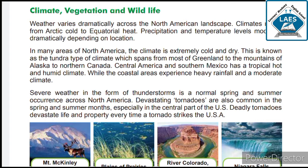This is known as the tundra type of climate, which expands from most of Greenland to the mountains of Alaska to Northern Canada. Central America and Southern Mexico has the tropical hot and humid climate.